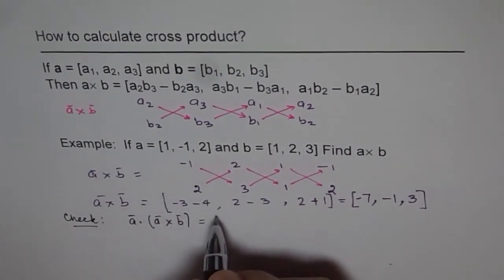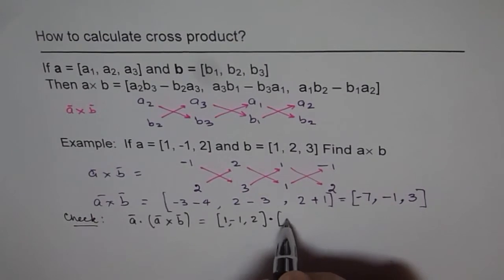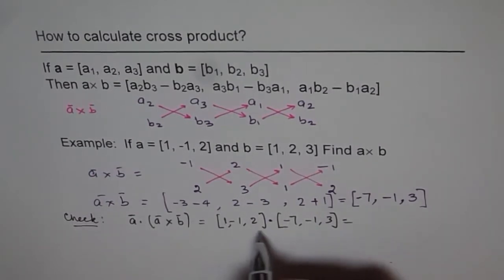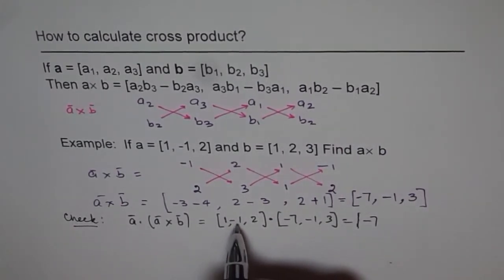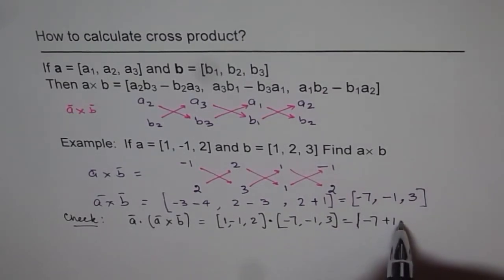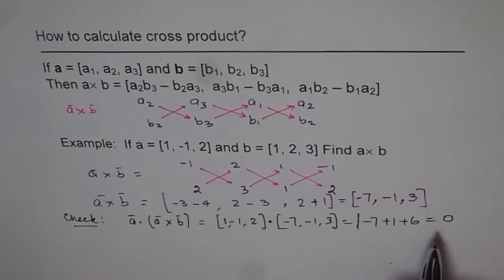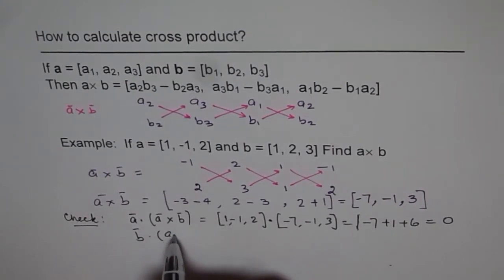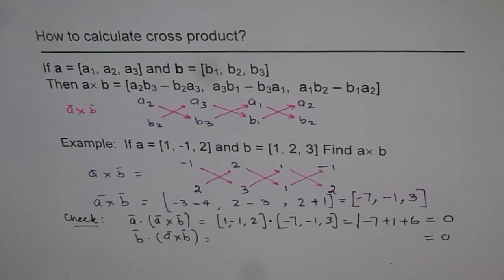Let's compute a dot (a cross b). Vector a is (−1, 2, 1) — wait, it's (−1, 2, ...) — dotted with what we got: (−7, −1, 3). Doing the dot product straight: minus 1 times minus 7 is minus 7; minus 1 times minus 1 is plus 1; 2 times 3 is plus 6. So: minus 7 plus 1 plus 6 equals 0. This proves the two vectors are perpendicular, confirming the cross product. You can do the same with b dot (a cross b) and should also get 0.